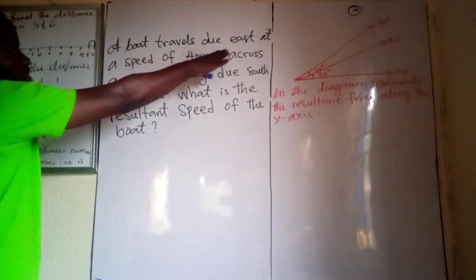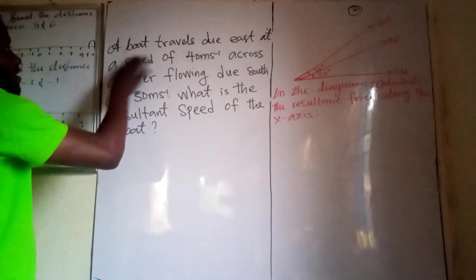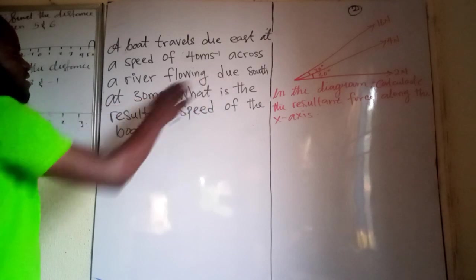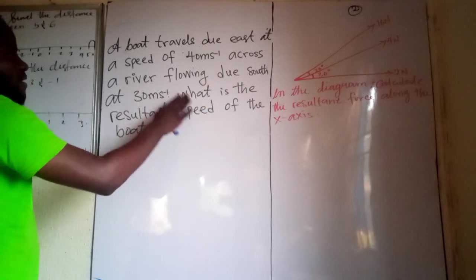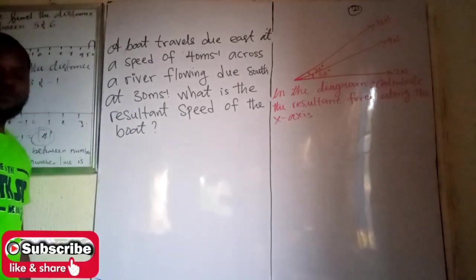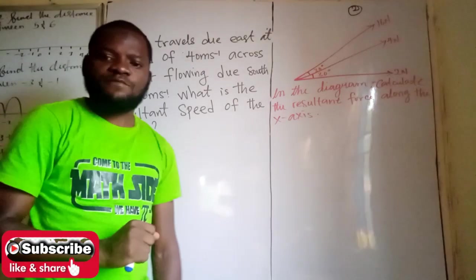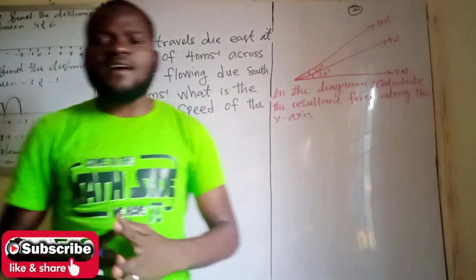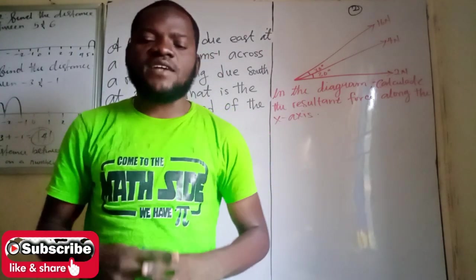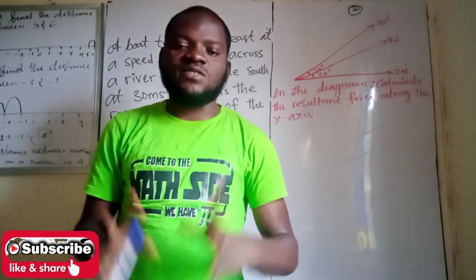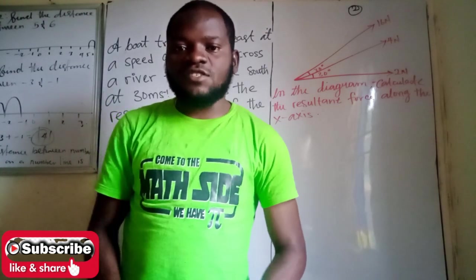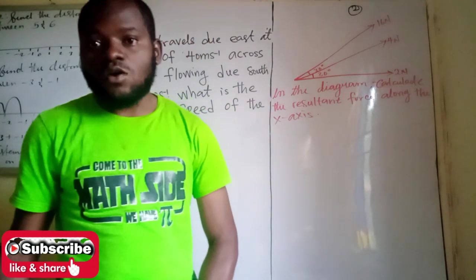The question says a boat travels due east at a speed of 40 meters per second across a river flowing due south at 30 meters per second. What is the resultant speed of the boat? How are we going to get the resultant speed? Remember in that class we said resultant is a single vector that will have the same effect as two or more vectors acting at a point. Now, let's quickly interpret this question and see how we can go about the solution.